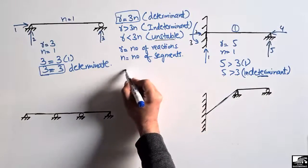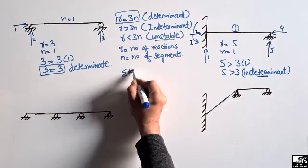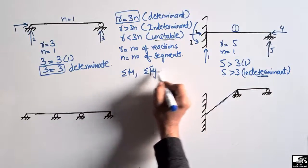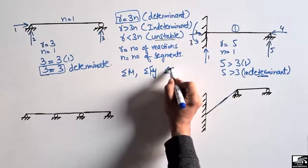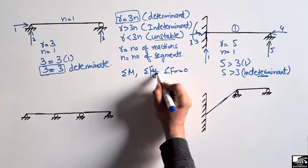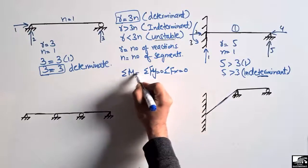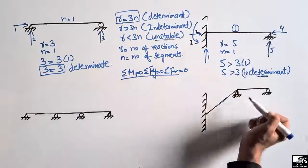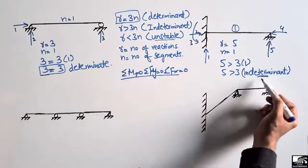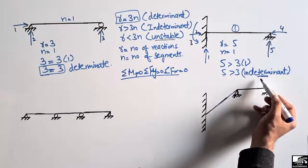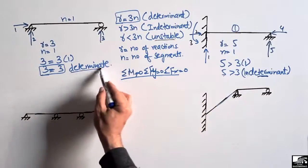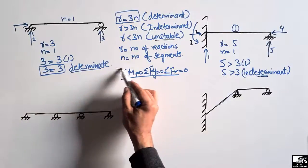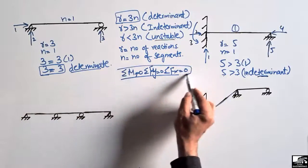For an indeterminate beam, the standard equilibrium equations — sum of moments, sum of vertical forces, and sum of horizontal forces equal to zero — cannot be used to find support reactions. For a determinant beam, however, these equilibrium equations are sufficient.